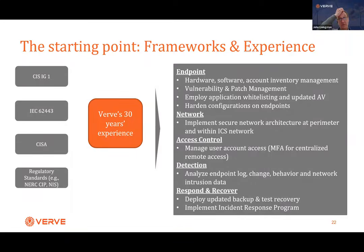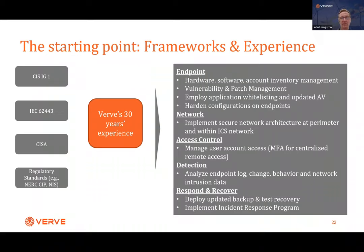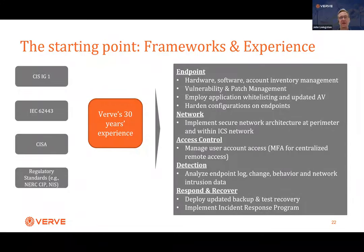On the network side: securing the network at the perimeter as well as within the ICS network. On the access control side: managing user and account access, particularly MFA for remote access, and standardizing on a single remote access point. For detection: at minimum getting log data and change data from endpoints, then adding network intrusion detection over time. For respond and recover: ensure backups are in place and have an IR plan. These five broad categories are where we believe the remediation journey should begin.